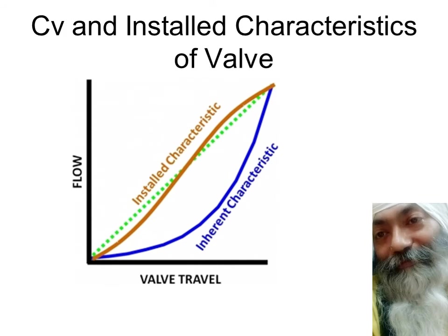For the equal percentage valve, the inherent characteristics have a curved shape, but because of the pressure dip, the actual installed characteristics are very close to linear. This is the reason we go in for equal percentage characteristic valves in industry — so that effectively the installed characteristics, along with delta P becoming lesser with increasing flow rate, are almost linear. The inherent characteristics of the equal percentage valve become more like linear in practice.